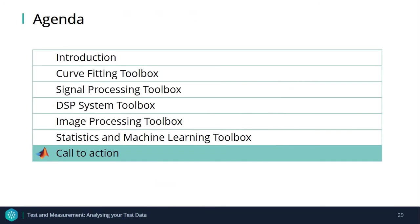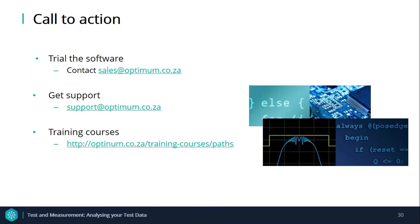And this brings me to the end of my presentation. If you wish to try out the software, you can contact one of the business development consultants or sales reps by emailing sales at optinum.co.za. If you are already using the tools or have any technical questions, you can email our support queue at support at optinum.co.za. If you would like to attend a training course to build your proficiency with using MATLAB and Simulink in your field, you can visit our website and navigate to the training course page. Thanks for watching and stay tuned for the third and final part next week Monday. Cheers.